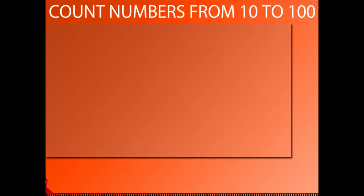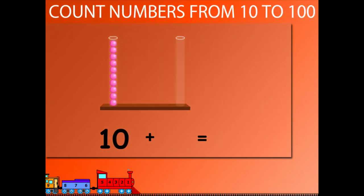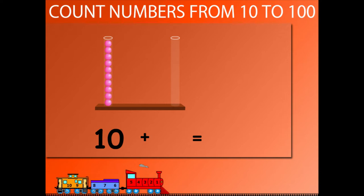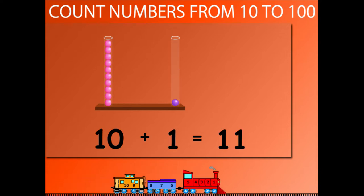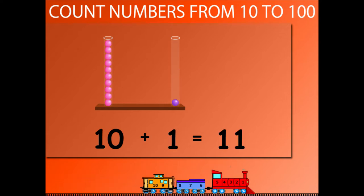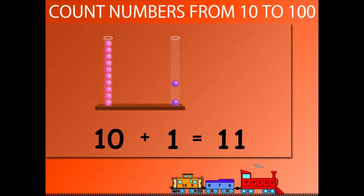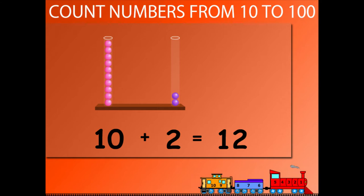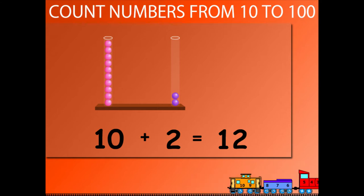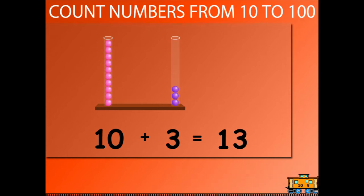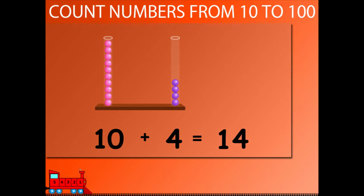Let's count numbers from 10 to 100. Let's begin with 10. 10 plus 1 is equal to 11. 10 plus 2 is equal to 12. 10 plus 3 is equal to 13. 10 plus 4 is equal to 14.